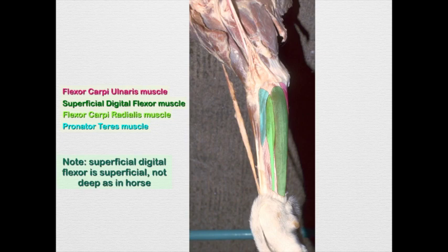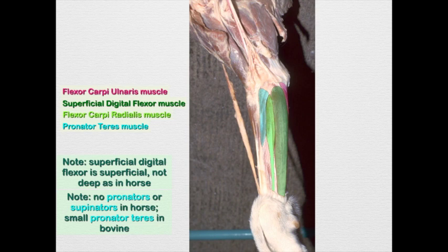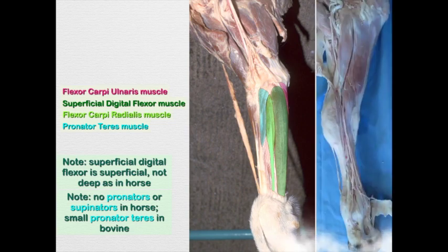The pronator teres muscle is very much reduced in the bovine, and we do not see any pronator or supinator muscles in the equine. Here's an image where up near the elbow, in a turquoise color, is that very small muscle — the bovine pronator teres. It provides a slight flexion of the elbow, but because of the fusion of the ulna to the radius, we're not going to see any pronation.